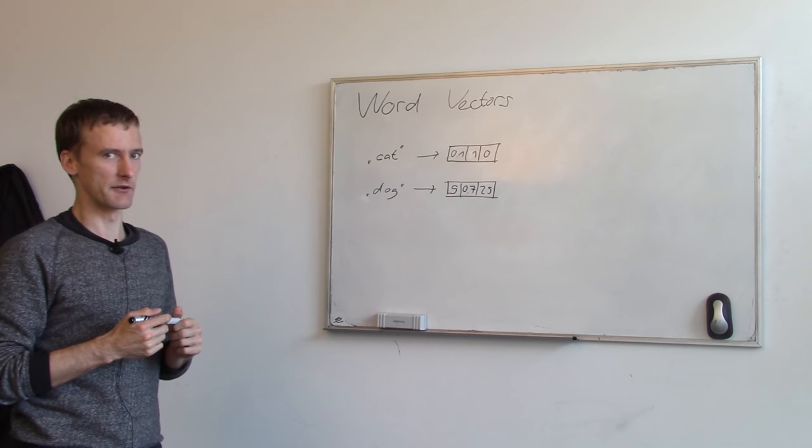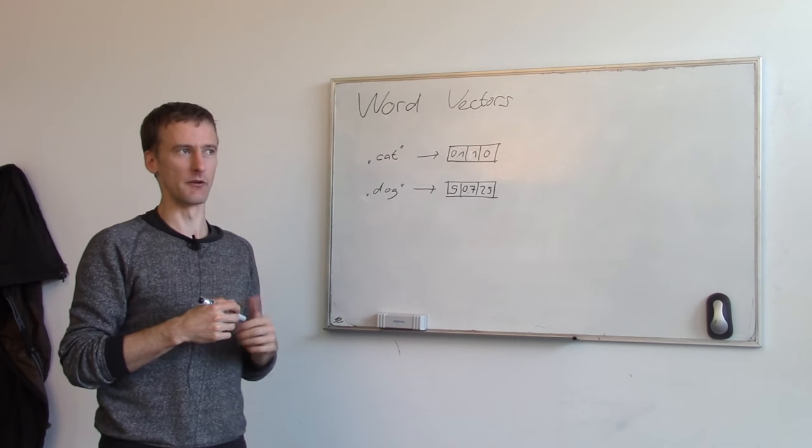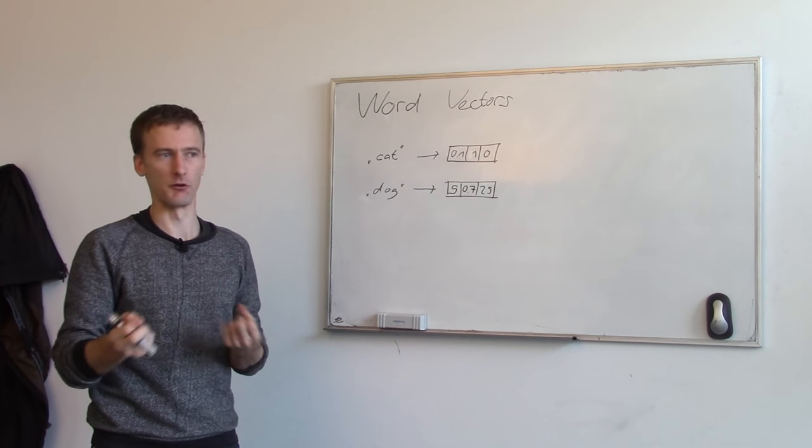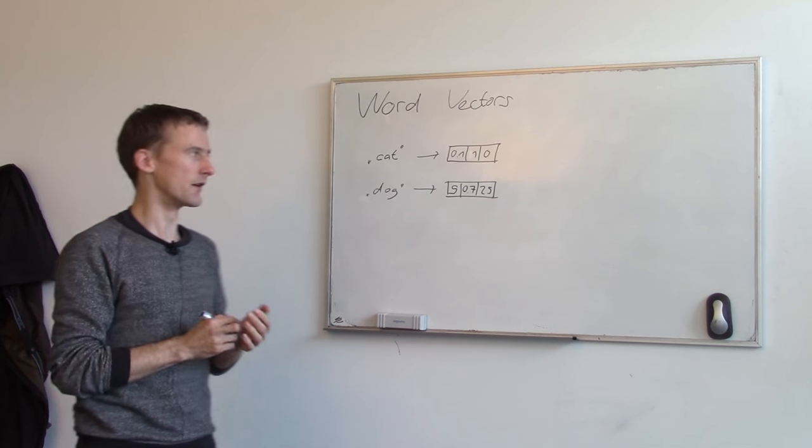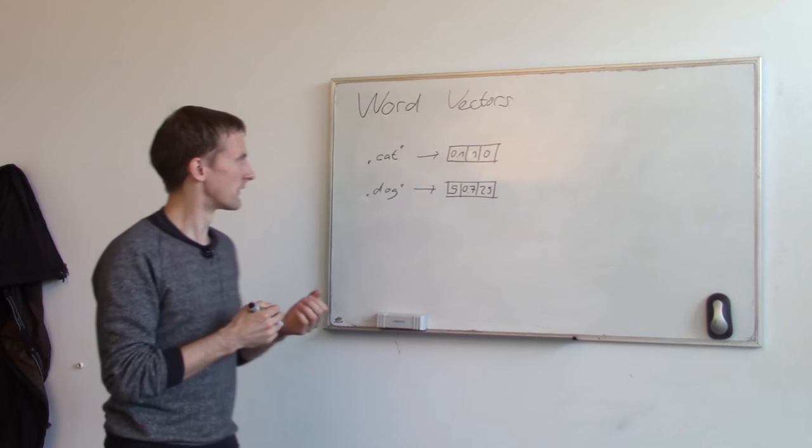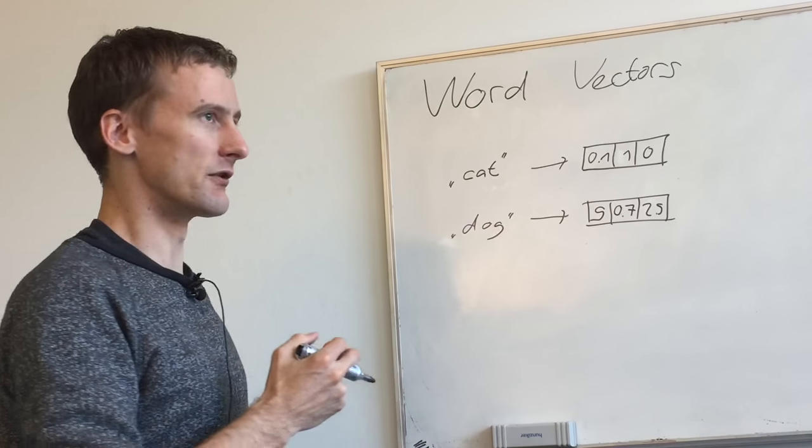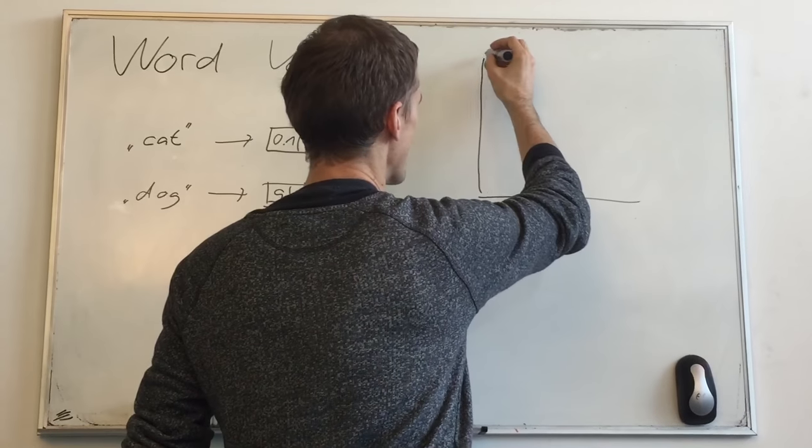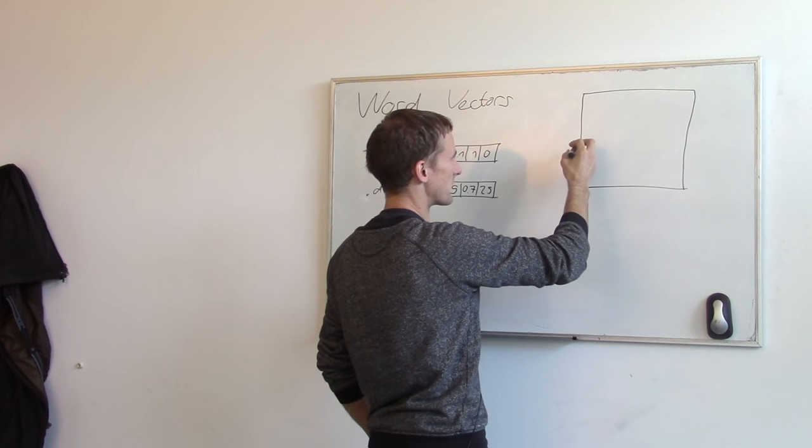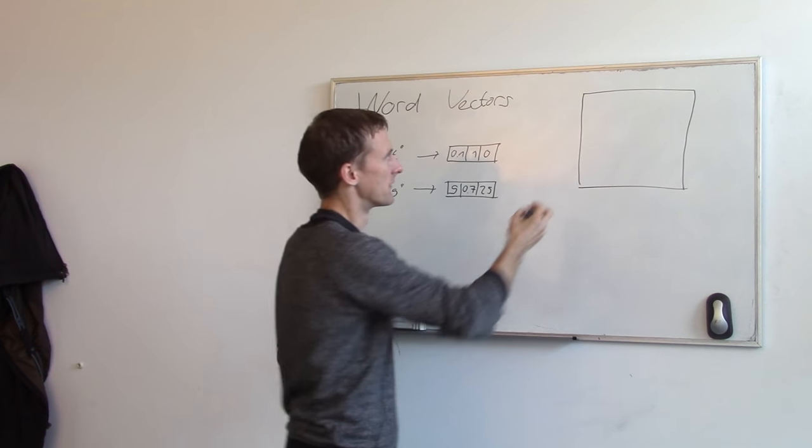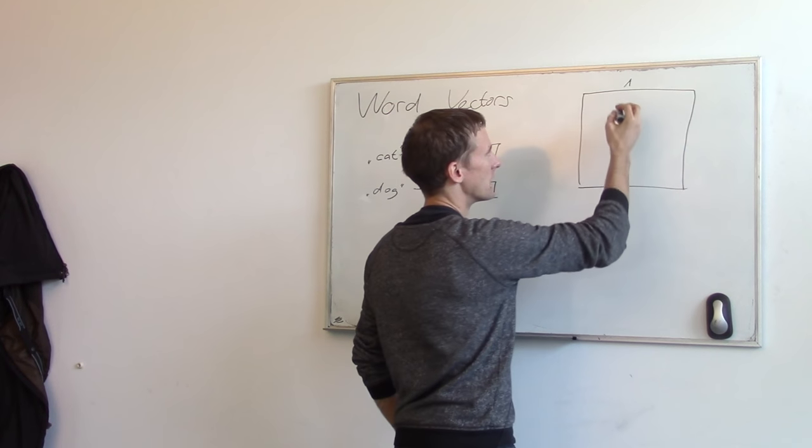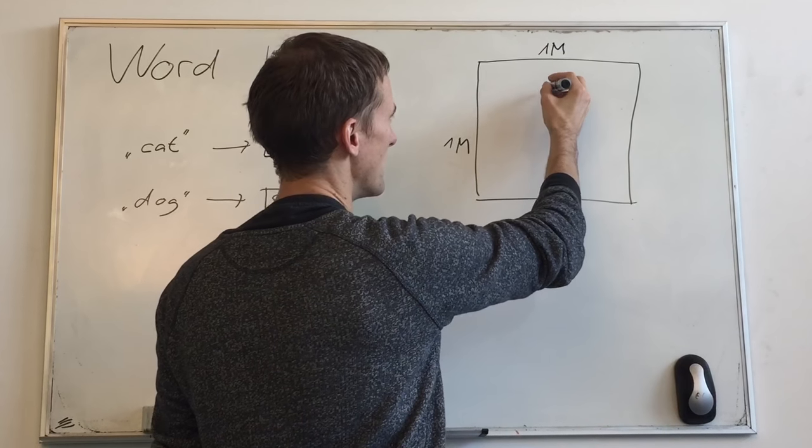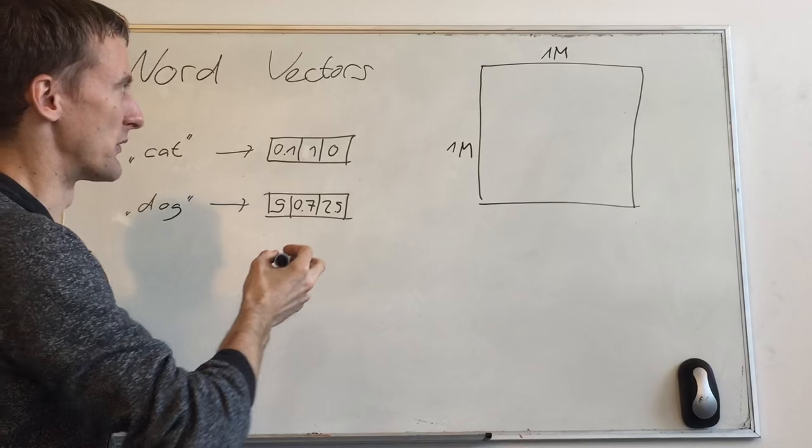Here we have actually a very nice unsupervised method. So we don't even need to know labels. We can just use a very big bunch of text, many, many documents. Let's take the entire Wikipedia and then you can use it to find such numbers for each word. So we take all the text we have and we build a very big matrix. A matrix, by the way, is just a table of numbers. The matrix contains all the words. So it's maybe one million by one million, if there are a million words.